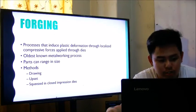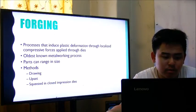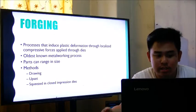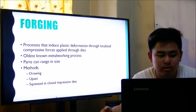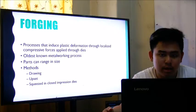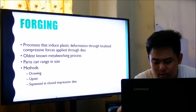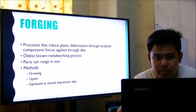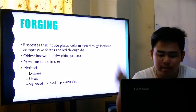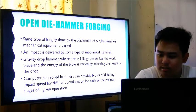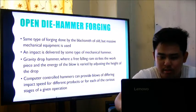Forging is one of the oldest metalworking processes. Parts can range in size, and there are three methods: open die, upset, and squeezed in closed compression dies. Forging involves plastically deforming metal from its raw stock to achieve a desired shape, and it has been revolutionized by industry — we are now in the era of Industry 4.0.